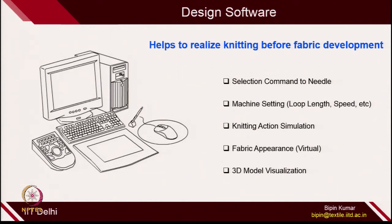You can also virtually check the fabric appearance. If you have a spun yarn, you can check how the fabric surface will look for a particular pattern. You can at any time change the color of the yarn to look at the surface. You can also do 3D model visualization — once you make the fabric, you can use a 3D model where the model can wear that fabric virtually and you can look at how the fabric will look on a 3-dimensional shape. So it's a complete package before doing or wasting any yarn. You can realize the structure of fabric on a 3D virtual model. This is the beauty of design software.